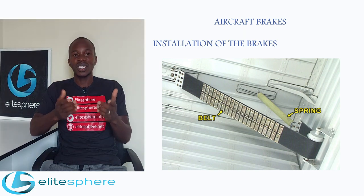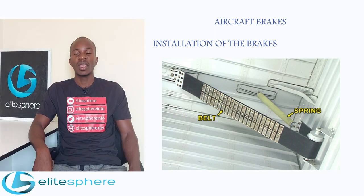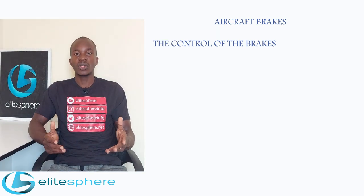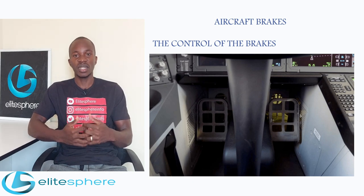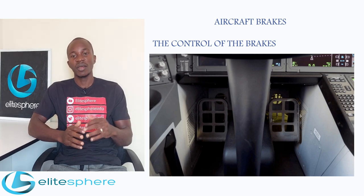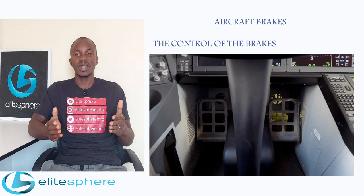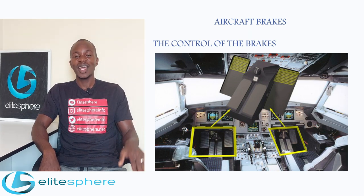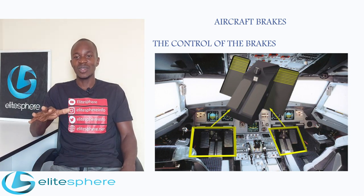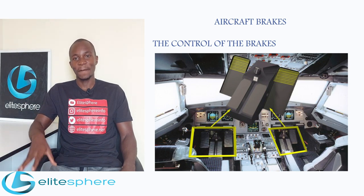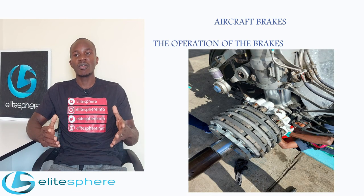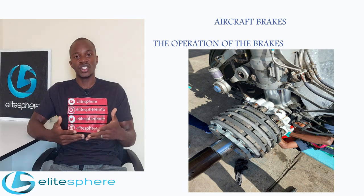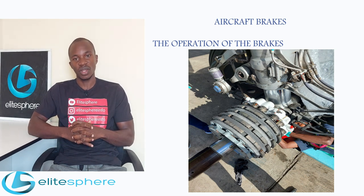The aircraft brakes are controlled through a mechanical or hydraulic connection between the brake units and the rudder pedals in the flight deck. The left rudder pedal controls the brakes on the left main gear, and the right rudder pedal controls the brakes on the right main landing gear.